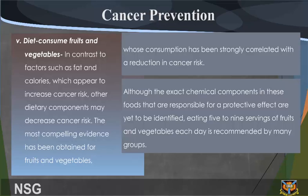5. In contrast to factors such as fats and calories, which appear to increase cancer risk, other dietary components may decrease cancer risk. The most compelling evidence has been obtained for fruits and vegetables, whose consumption has been strongly correlated with a reduction in cancer risk. Although the exact chemical components in these foods responsible for a protective effect are yet to be identified, eating 5–9 servings of fruit and vegetables each day is recommended by many groups.